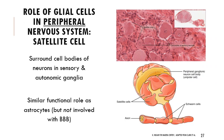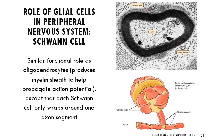In the peripheral nervous system we have satellite cells, which wrap around neurons and are similar to astrocytes but don't form a blood-brain barrier - they just do that support role of regulating concentrations of different chemicals. There are also Schwann cells - in the peripheral nervous system there's a one-to-one ratio of Schwann cell to myelin sheath, unlike oligodendrocytes in the CNS. Schwann cells wrap around the axon and form the myelin sheath between themselves and the axon, which is important for propagating electrochemical signals.